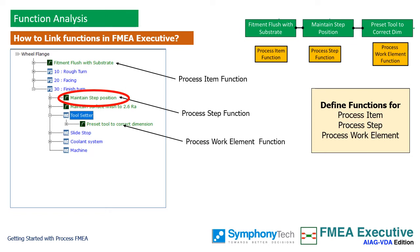Here we need to understand the concept of focus element. A focus element is defined as one upon which your current failure analysis is focused. In process FMEAs, focus elements are always process steps. To link the functions in a function net, place your cursor on the function of your focus linked with the process step, then click the function and failure chain button on the button bar.